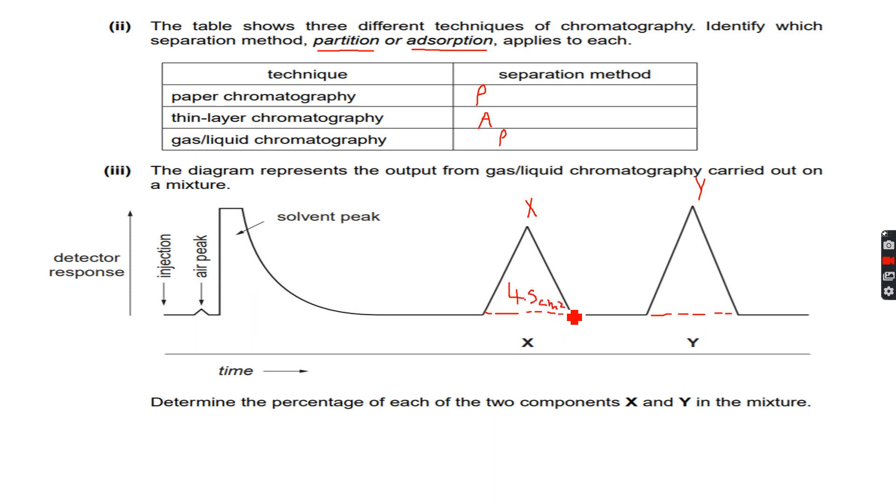I get 4.5 centimeter square. When I do that for Y, I get area 5.25 centimeter square. So the percentage composition of X will be equal to 4.5 over 4.5 plus 5.25, and we multiply this by 100, so we get around 46.2 percent.